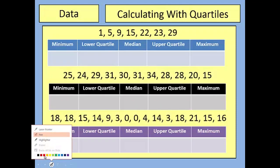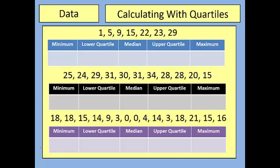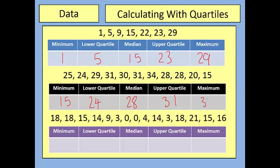Here are three questions for you to have a go at — press pause, write them down, then press play for the answers. For question 1 (already in order): minimum 1, lower quartile 5, median 15, upper quartile 23, maximum 29. For question 2 (needs ordering): minimum 15, lower quartile 24, median 28, upper quartile 31, maximum 34. For question 3: minimum 0, lower quartile 3, median 14, upper quartile 18, maximum 21.